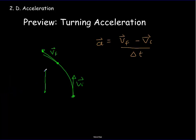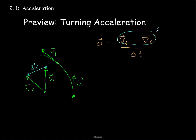We can subtract vectors by joining them tail to tail. Here is v_i, here is v_f. The subtraction goes from the initial to the final velocity vector — this is the vector delta v. Dividing that vector by delta t gives the acceleration vector. As it turns out, the acceleration vector always points towards the center of the circle, and it keeps changing direction while always pointing toward the center. The force causing the turn always points in the same direction.